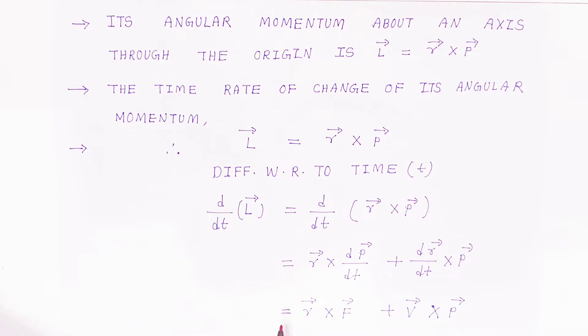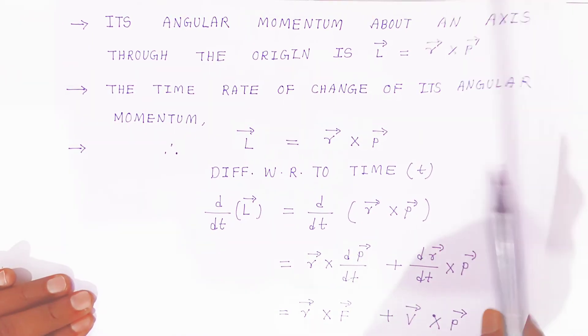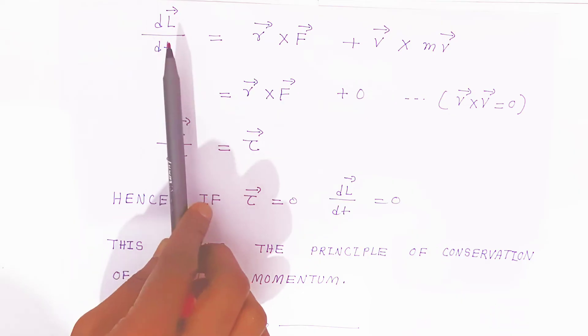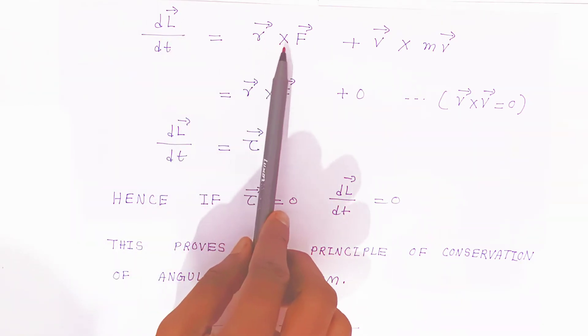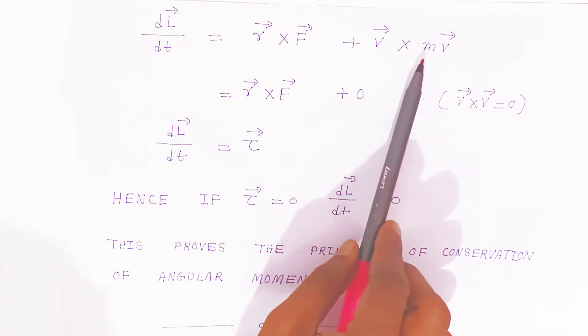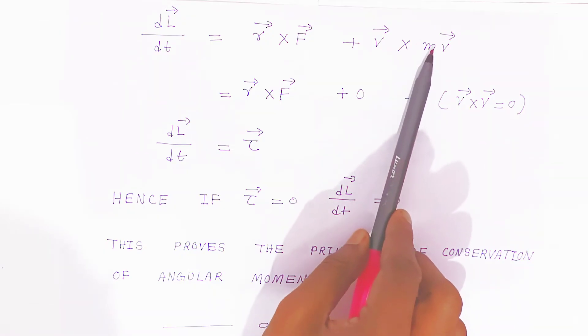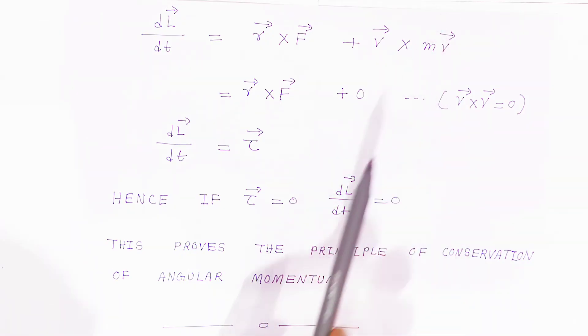That means dL bar upon dt is nothing but r bar cross F bar plus v bar cross p bar. Instead of p bar we can write m v bar.